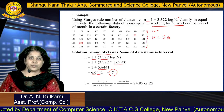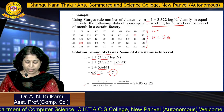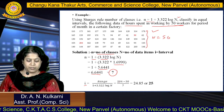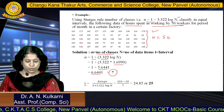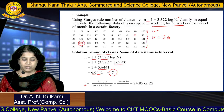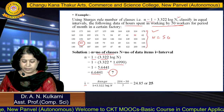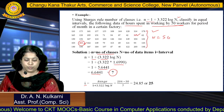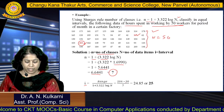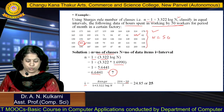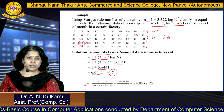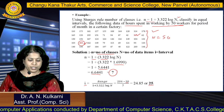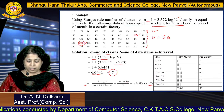Now calculate the class interval. The interval = range divided by the number of classes. The maximum value in the data is 204 and the minimum is 30, so range = 204 − 30 = 174. Dividing 174 by 7 gives 24.85, which rounds to 25. So the class interval width is 25.